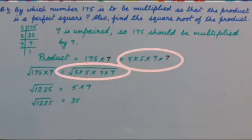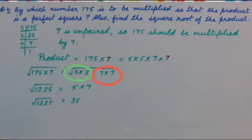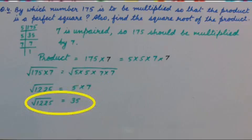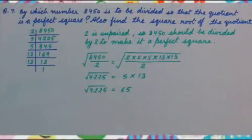Because we have to find the product, this factor also will be multiplied by 7. Now we have pairs of 5 and 7. So square root of 1225 is 35. Question number 7.